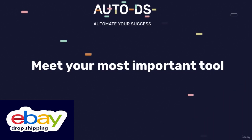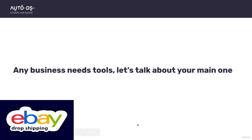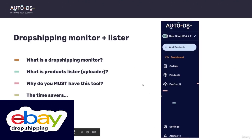This is one of my favorite lessons. Let's talk about the tool you need for your business — you cannot manage any dropshipping business without something called a monitor. The main tool you need for your dropshipping business is something called a dropshipping monitor, and also a dropshipping lister. A dropshipping monitor is a tool that monitors your prices and stocks with your supplier.